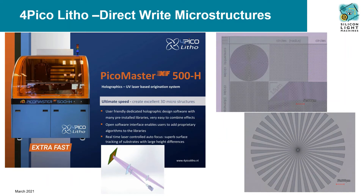4Pico Litho is another company that utilizes the GLV's high speed, contrast, and channel count for high throughput holographic origination. Their UV laser direct-write system is capable of creating 3D microstructures with a critical dimension of 0.5 microns. On the right, we see examples of diffractive optical elements created using a GLV amplitude modulator.